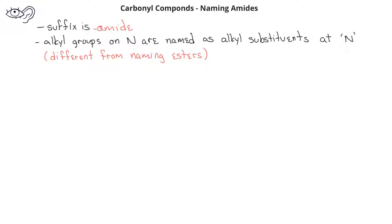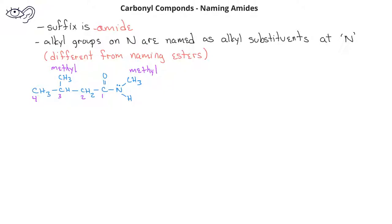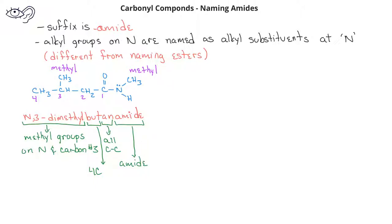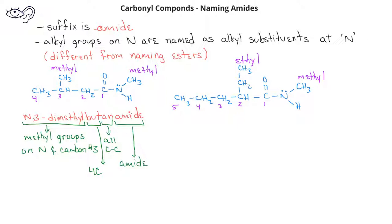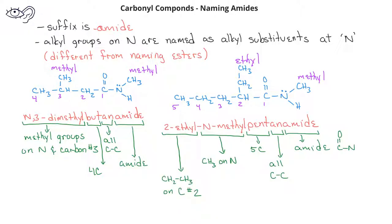We name the alkyl groups on the nitrogen as if they were a normal substituent. In this first example, with a secondary amine, we have a four-carbon chain with a methyl group attached to the nitrogen and another methyl group attached to the third carbon in the carbon chain. We would name this N,3-dimethylbutanamide. In this second example, we have a methyl group on the nitrogen and an ethyl substituent on the second carbon in a five-carbon chain. We would name this 2-ethyl-N-methylpentanamide.